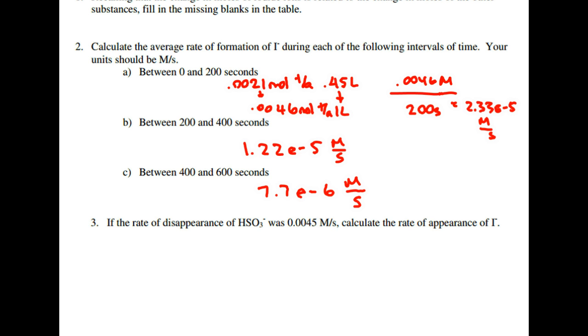And for question number 3, when it says, if the rate of disappearance of HSO3 minus was 0.0045 molarity per second, can you calculate the appearance of I minus? So we figured out from our ChemQuest 42 that there's a correlation there. And the correlation is dependent upon the coefficients. So the coefficients of HSO3 minus was 3 and of I minus was 1. So there should be a 3 to 1 ratio here. So if it's 0.0045 and there's a 3 to 1 ratio, all we're doing is dividing that by 3 to get us what the rate of appearance of I minus is. And that should give you 0.0015 molarity per second.